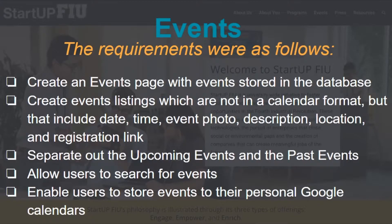For the Events page, the requirements were as follows: create an Events page with events stored in the database; create event listings which are not in a calendar format, but that include the date, time, event photo, description, location, and registration link; separate out the upcoming events and the past events; allow users to search for events; and enable users to store events to their personal Google calendars.